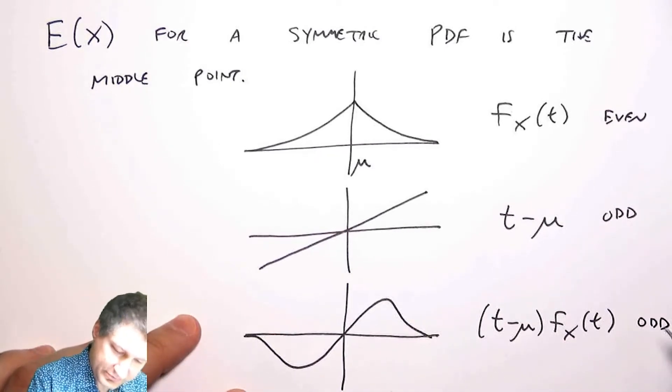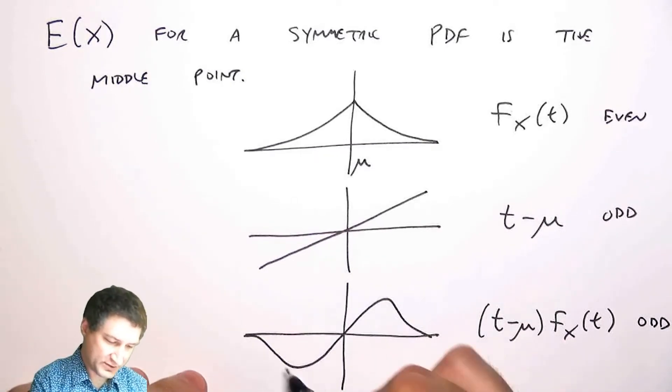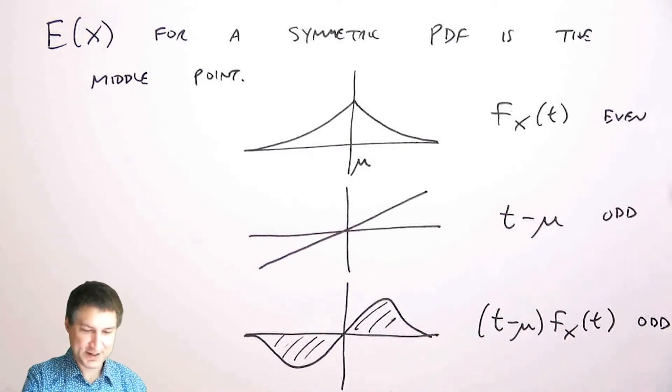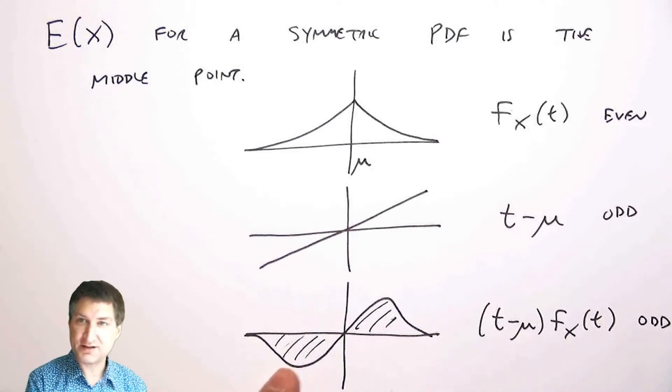is also going to be an odd function. It's going to look probably something like this, right? And what's going to happen when I integrate this function? Well, there's half of the stuff here and half of the stuff here. So when I integrate this function, I'm going to get zero because the negative part balances out the positive part.